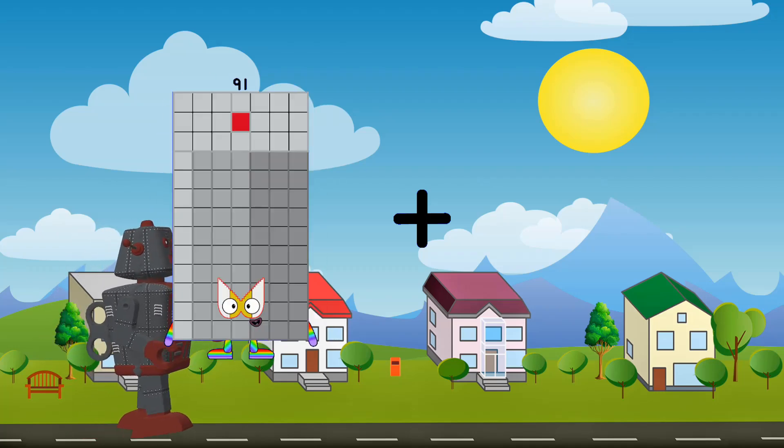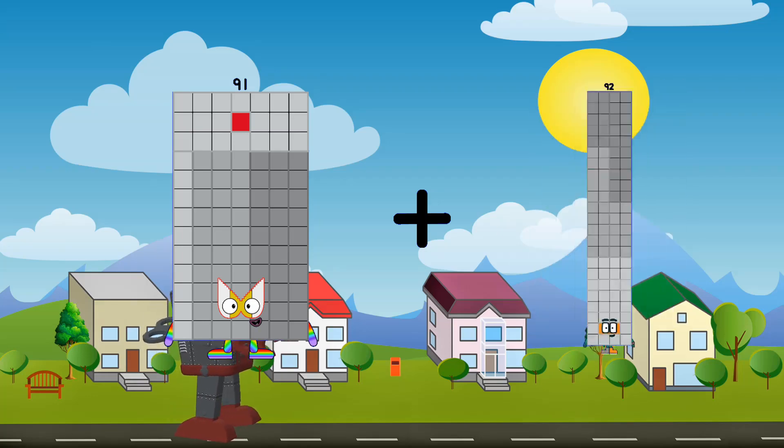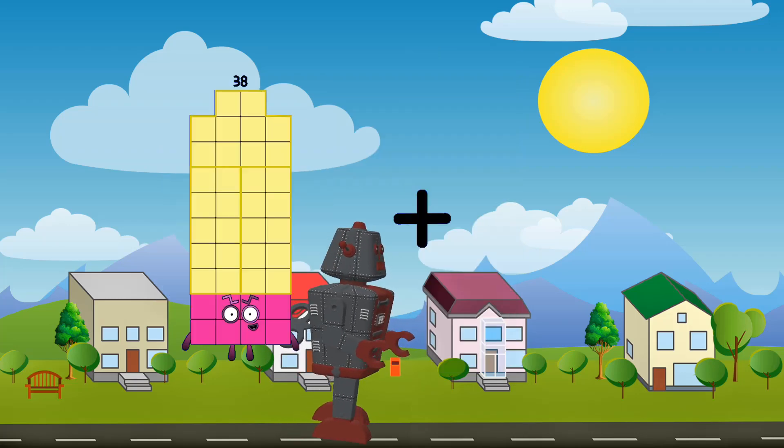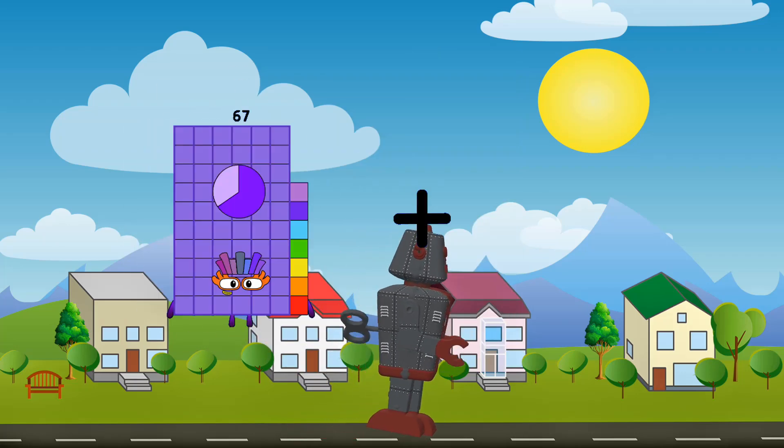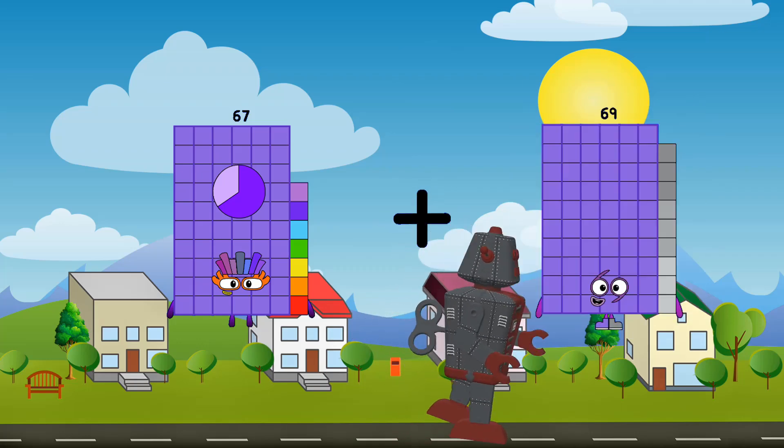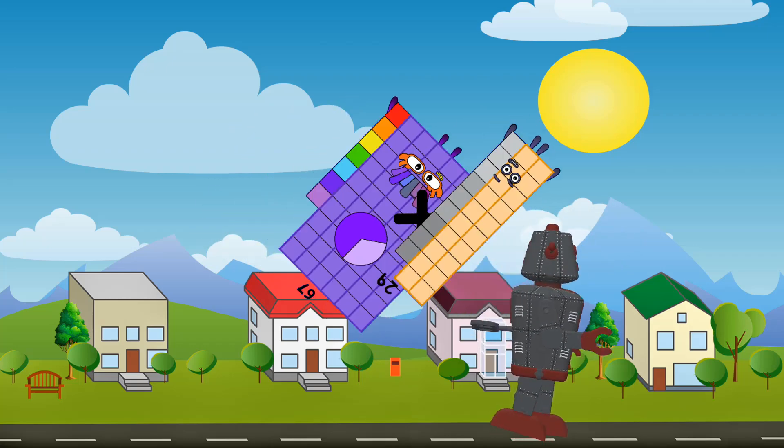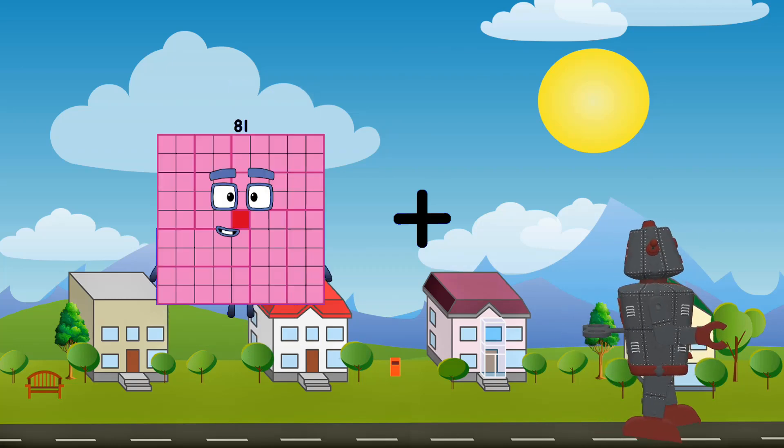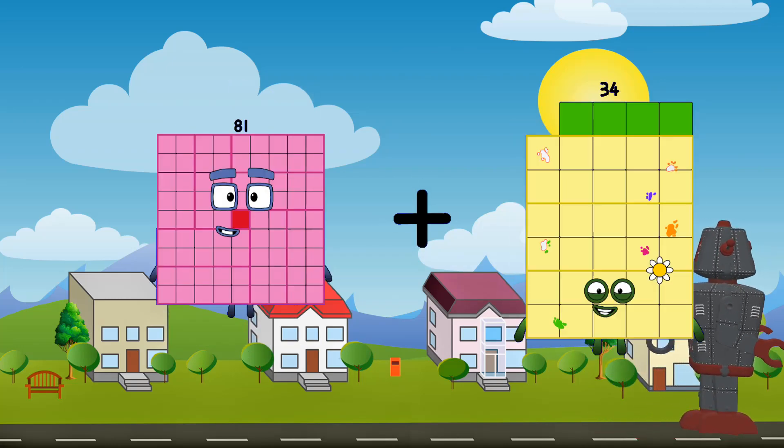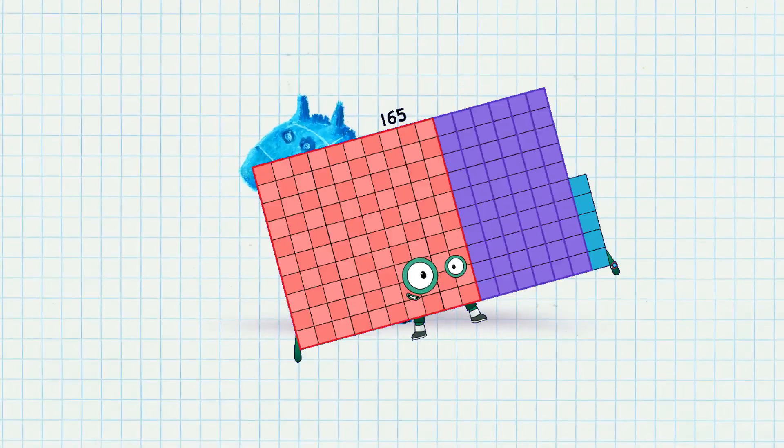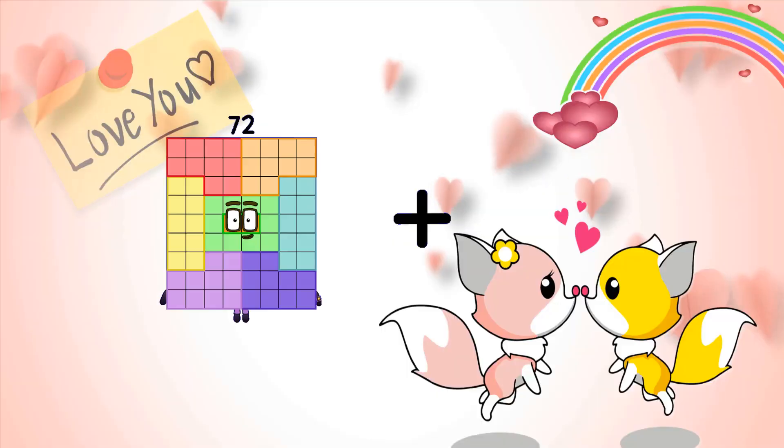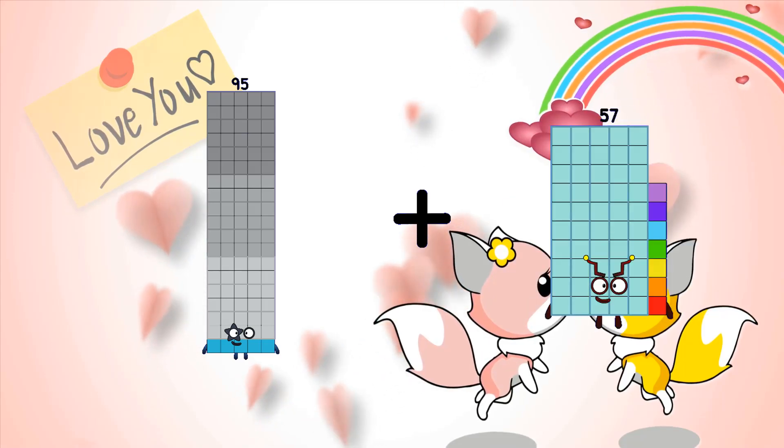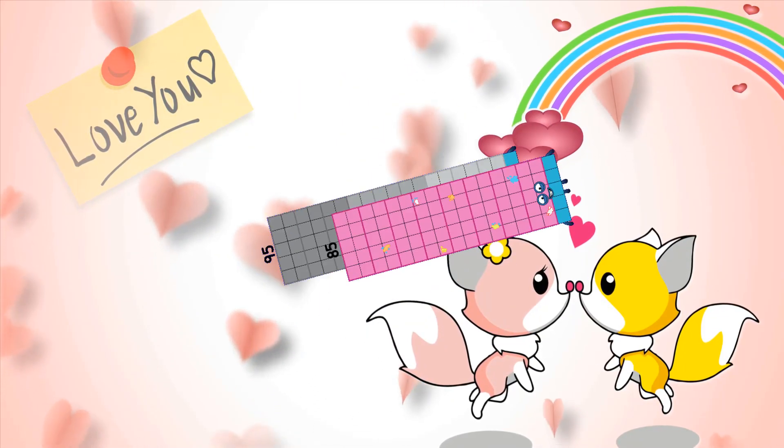91 plus 69 equals 160. 67 plus 29 equals 96. 81 plus 84 equals 165. 95 plus 85 equals 180.